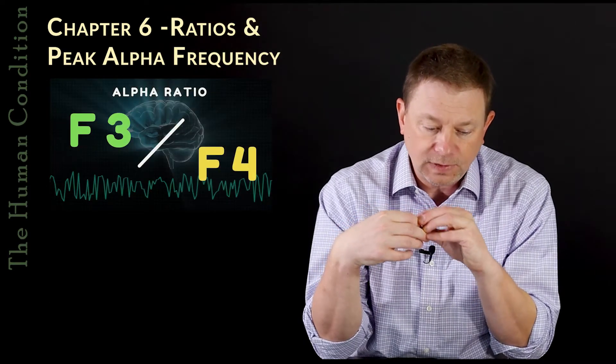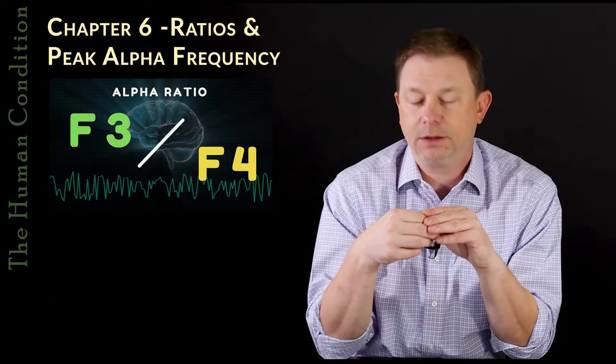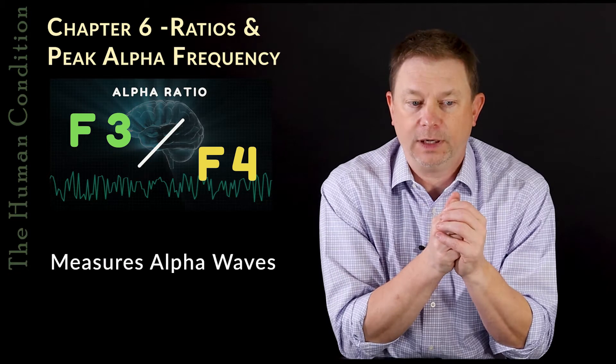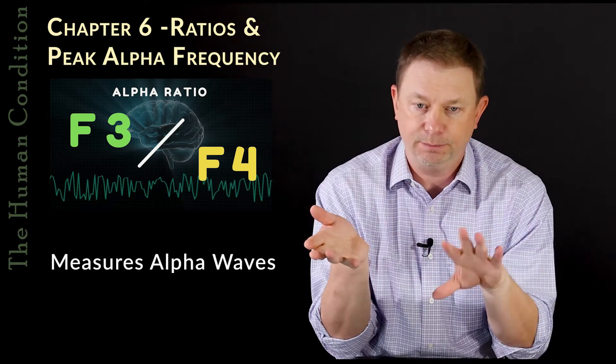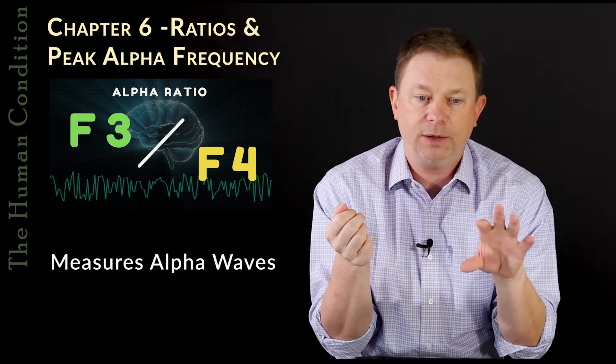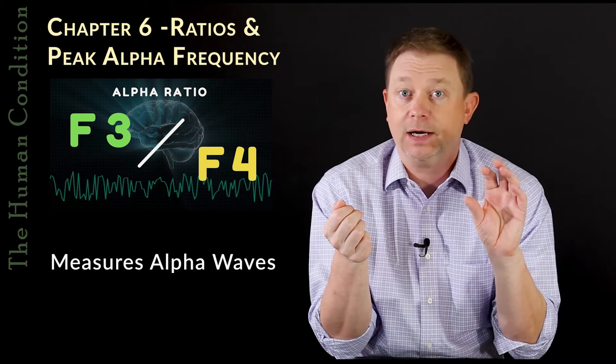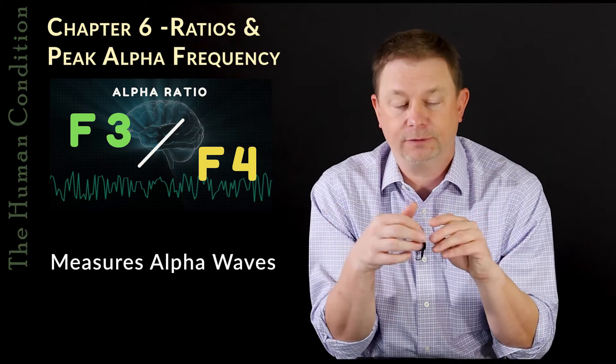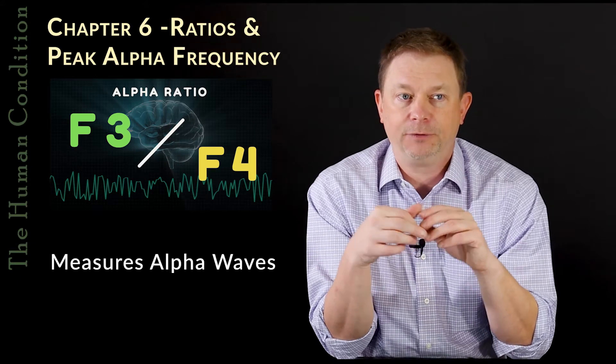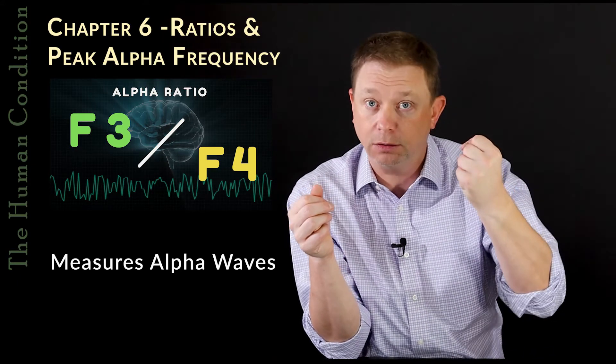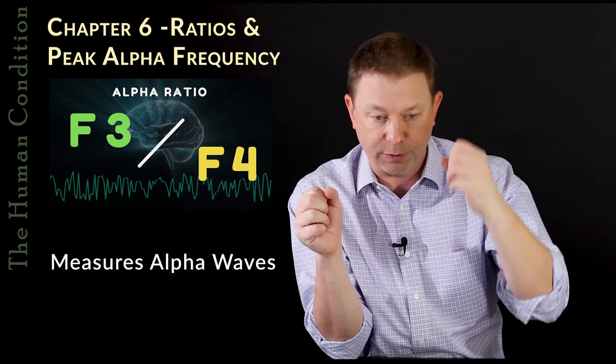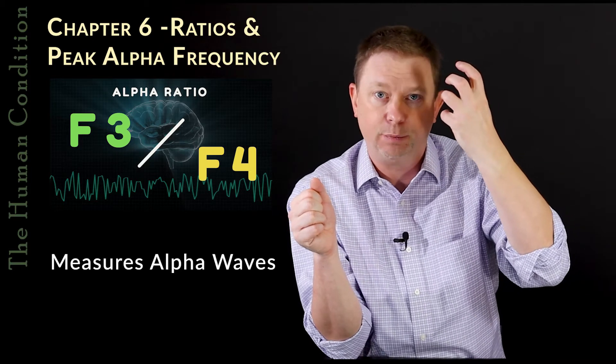So the difficulty with this ratio is that it measures alpha waves. And alpha waves are a middle to lower frequency brainwave that is kind of an idling brainwave. It's not the most powerful brainwave. So typically, if your left frontal lobe was strong, not just alpha waves, but strong generally, you wouldn't have a lot of depression. You would have a very strong state of mind where you don't have much depression.